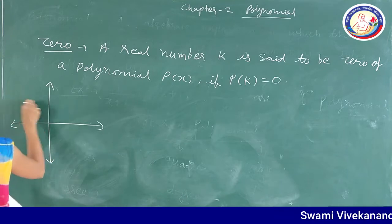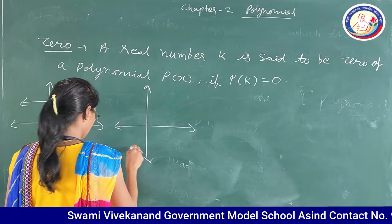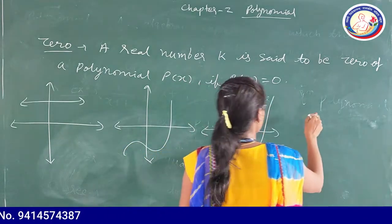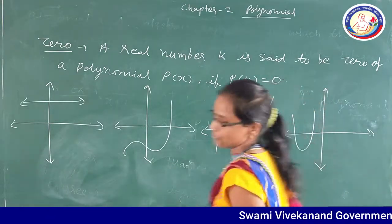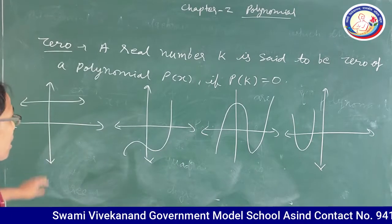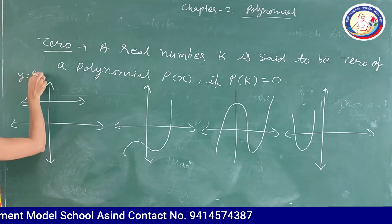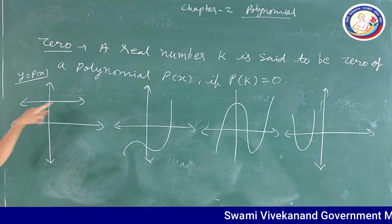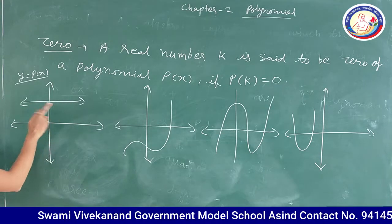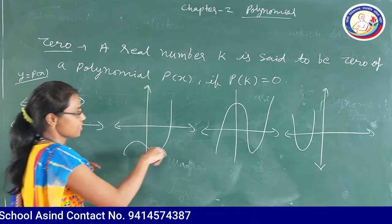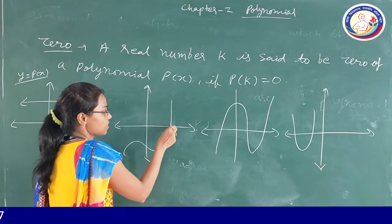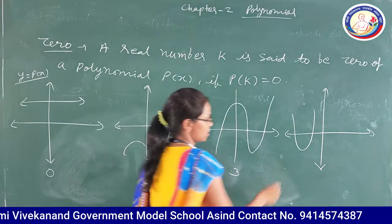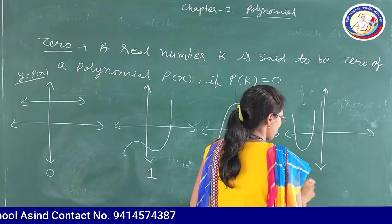The graph is given on the x-axis and y-axis. The number of zeros means: for the polynomial y = p(x), however many points the graph intersects the x-axis, that is the number of zeros. For the first graph, it does not intersect the x-axis at any point — only the y-axis at one point — so number of zeros is zero. Second graph intersects x-axis at one point, so zeros = 1. Third graph intersects at three points, so zeros = 3. Fourth graph intersects at two points, so zeros = 2.